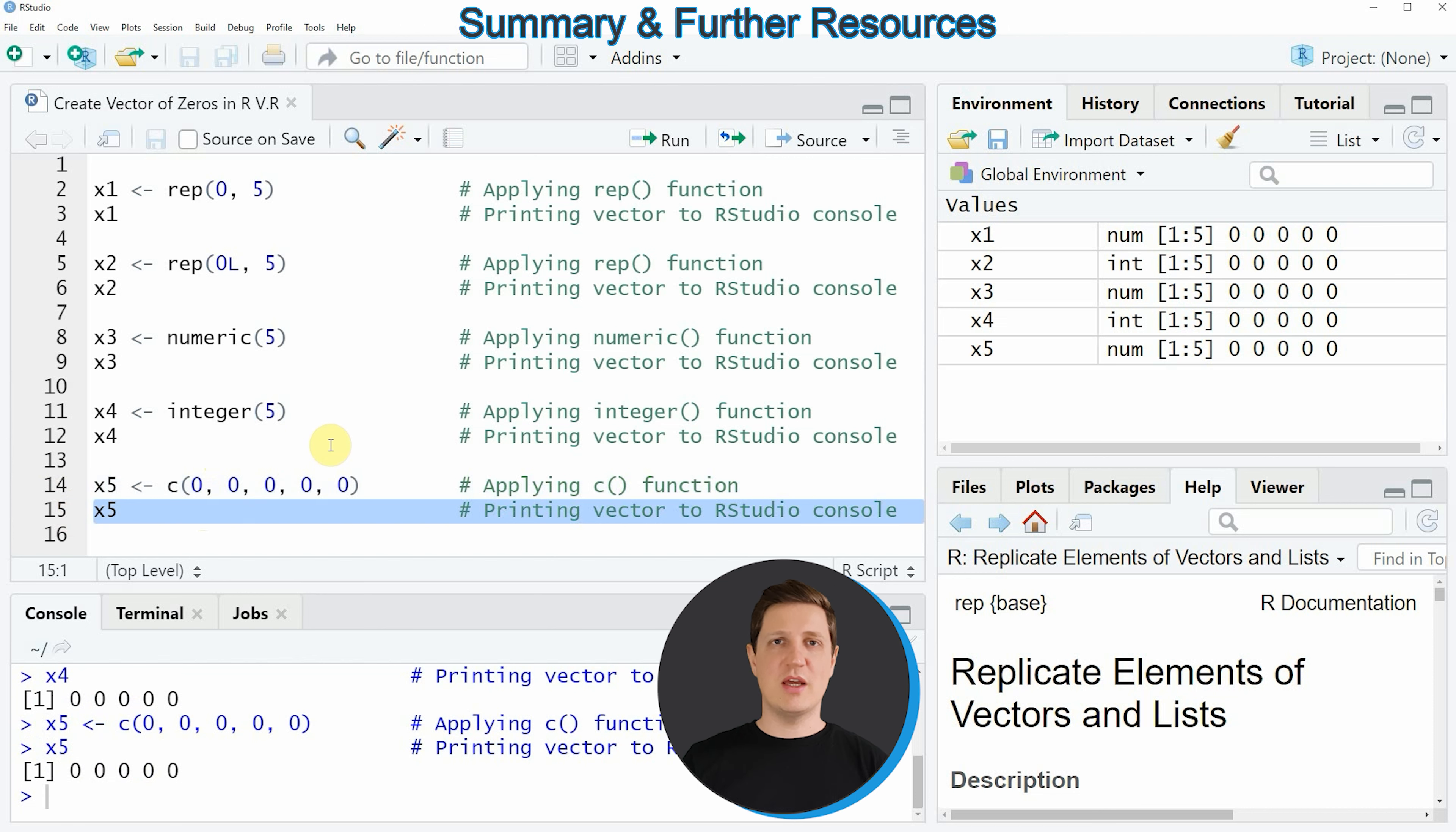In this video I have explained in five different examples how to create a vector of zeros in the R programming language.